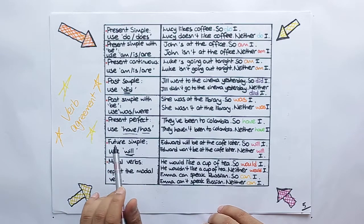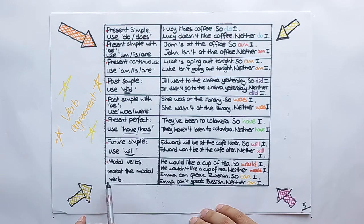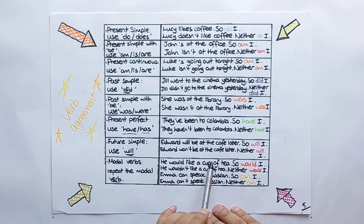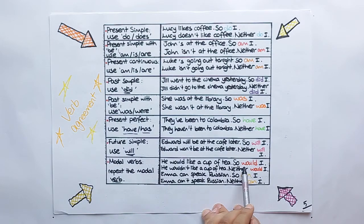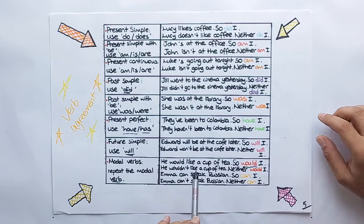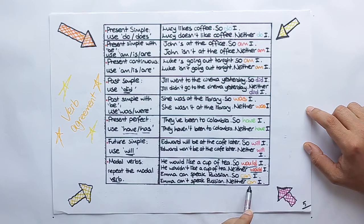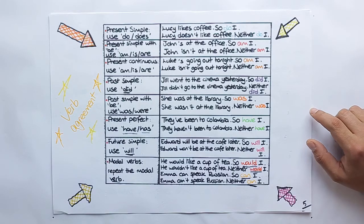Yes, with the modal verbs, everybody. With the modal verbs. Repeat the modal verbs. Here, instruction says. He would like a cup of tea, so would I. He wouldn't like a cup of tea, neither would I. Or Emma can speak Russian, so can I. Or Emma can't speak Russian, neither can I. These are the examples for modal verbs.